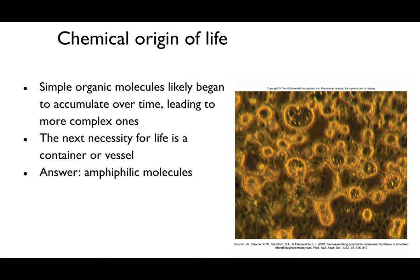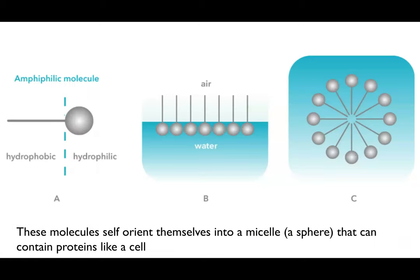Once you have all those building blocks, you need a vessel—you need a cell. Even bacteria and archaea have cells, though they're not as complex as eukaryotic cells. The answer for the vessel comes from what we call amphiphilic molecules, which you may recognize from discussions of the bacterial cellular membrane. They have a hydrophilic head and a hydrophobic tail, and they can orient themselves spontaneously in water, or form a micelle or sphere.